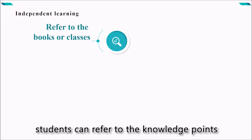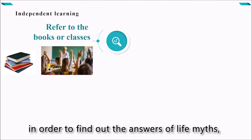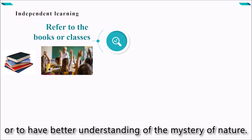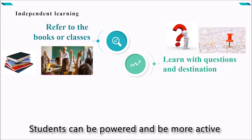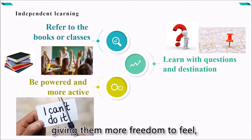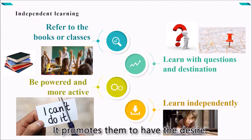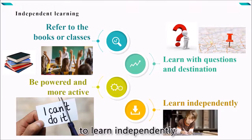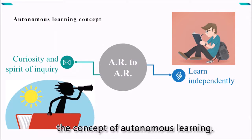In addition, students can refer to knowledge points in the books or classes in order to find out answers to life mysteries or to have better understanding of the mystery of nature. Therefore, students can learn with questions and with destinations. Students can be proud and more active in learning by their curiosities, giving them more freedom to feel, to enjoy, and to study the beauties of science. This promotes them to have desires to learn independently. That is what AR to AR means, the context of autonomous learning.